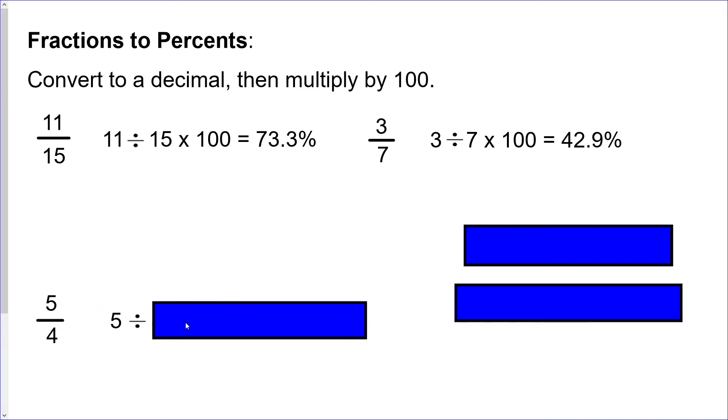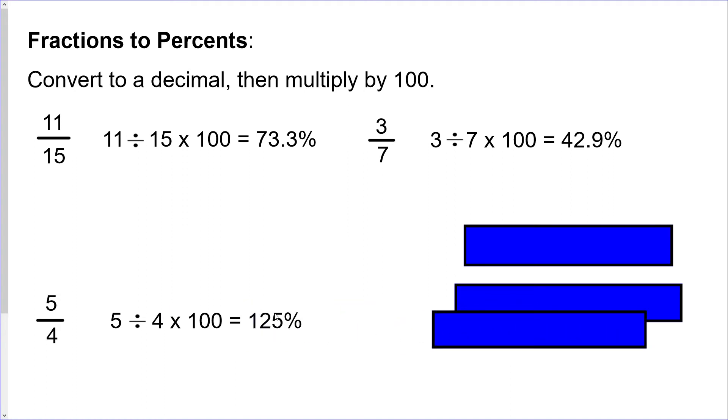Great job, I'll assume you got perfect on that question, but we'll go over it anyways just to be sure. So you do the same thing: 5 divided by 4, times 100, and you will end up with 125 percent.